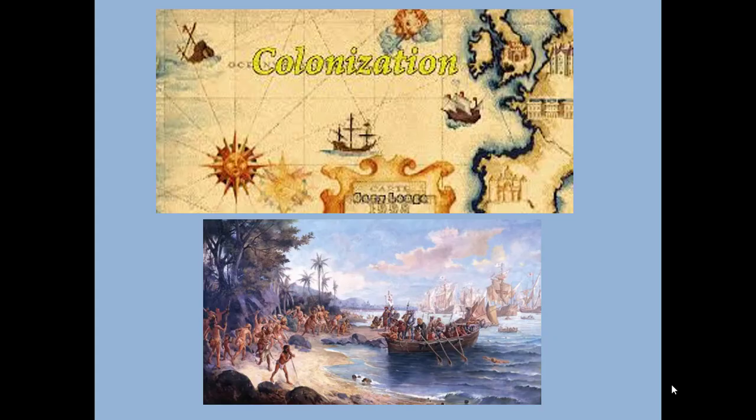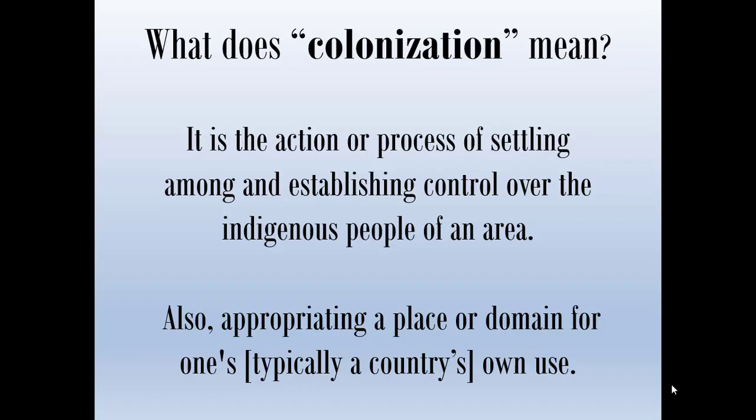Chapter 2: American Experiments, 1521 to 1700. In this chapter, we're talking about colonization of the New World. Chapter 1 explained who the three cultures were that collided at the time of European contact and exploration. These three peoples — the Europeans, the Africans, and the Native Americans — their interactions and contributions will continue throughout American history, even to the present day.